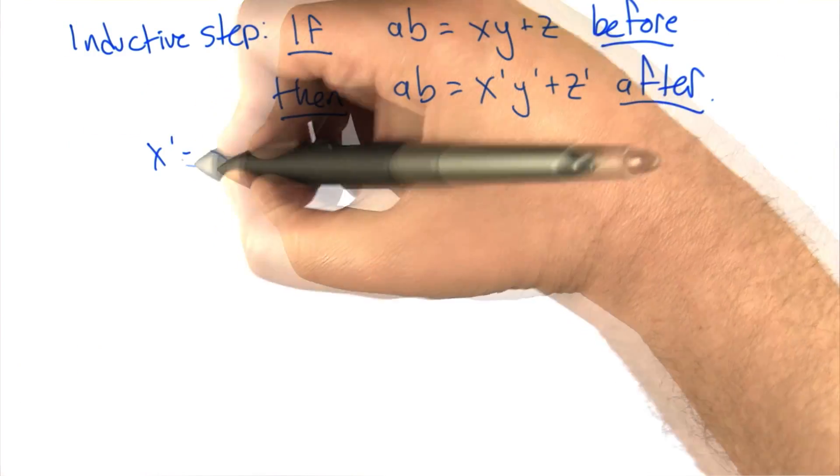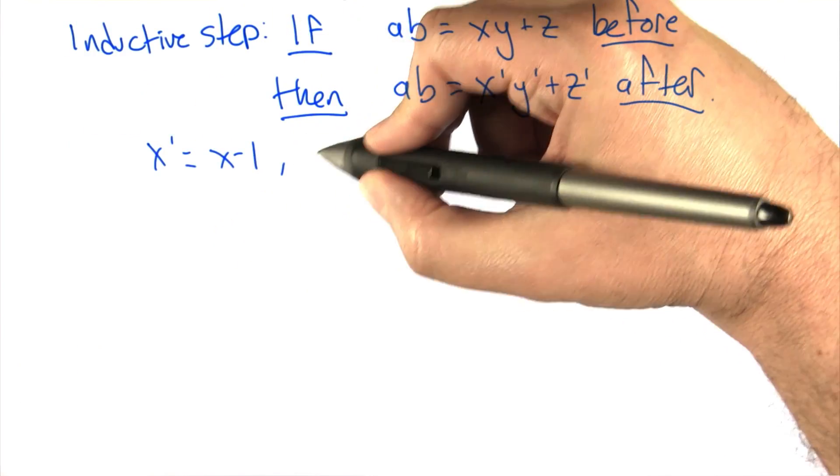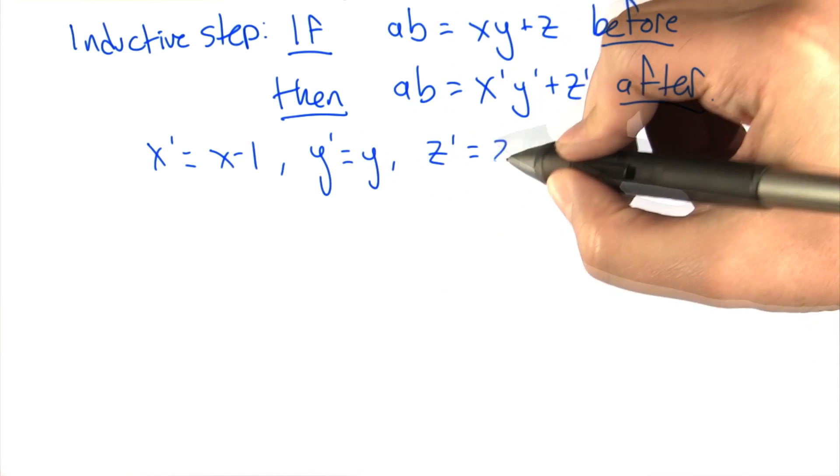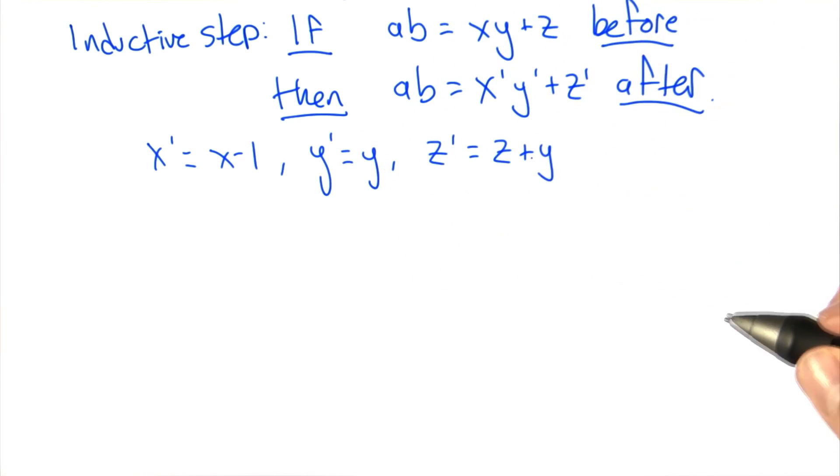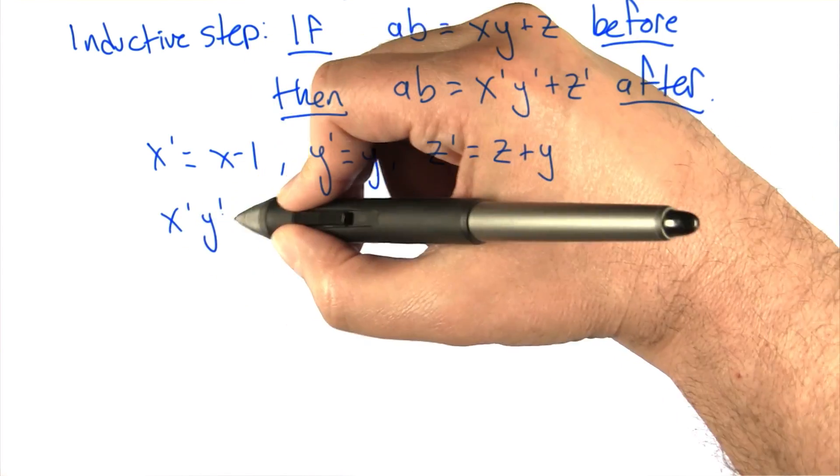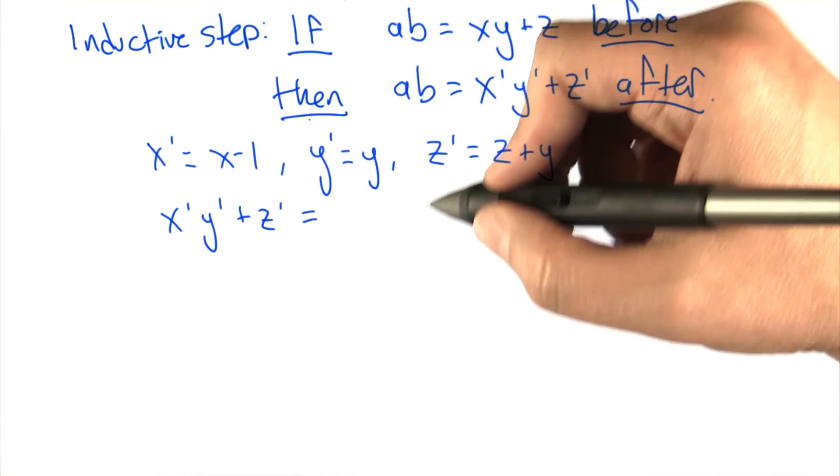We basically have the new value of X is the old value minus 1, the new value of Y, well, it didn't change, and the new value of Z is the old value of Z plus Y. So now what can we say about X prime times Y prime plus Z prime? We know what X prime, Y prime,